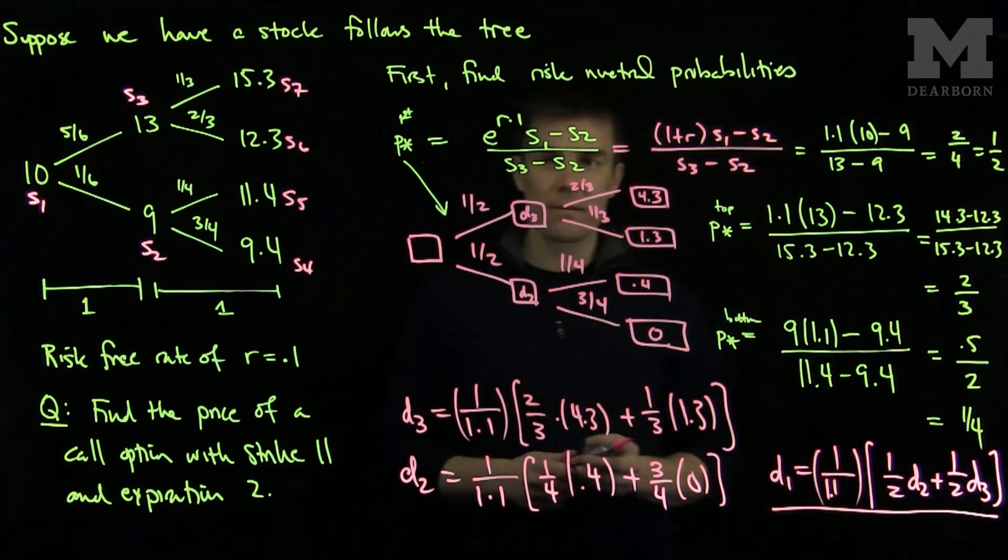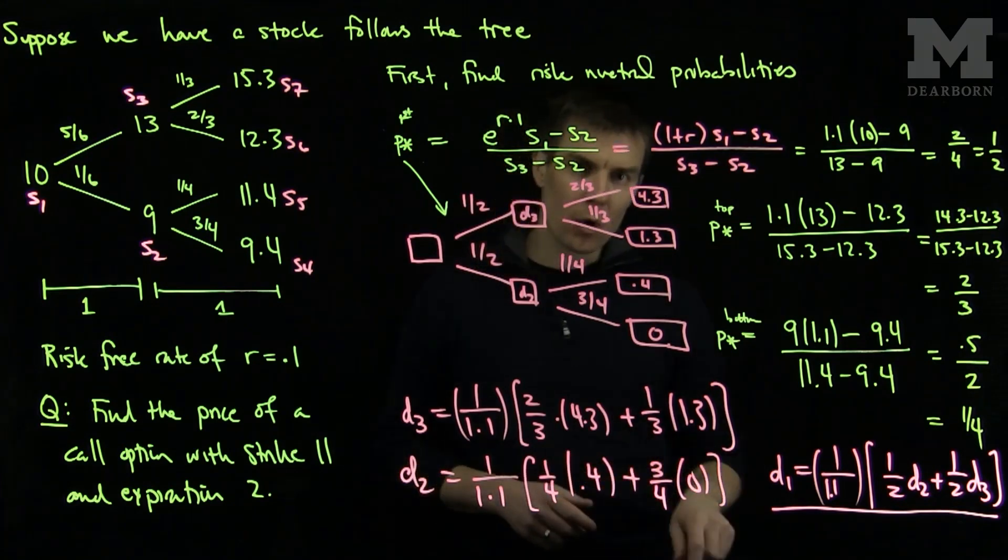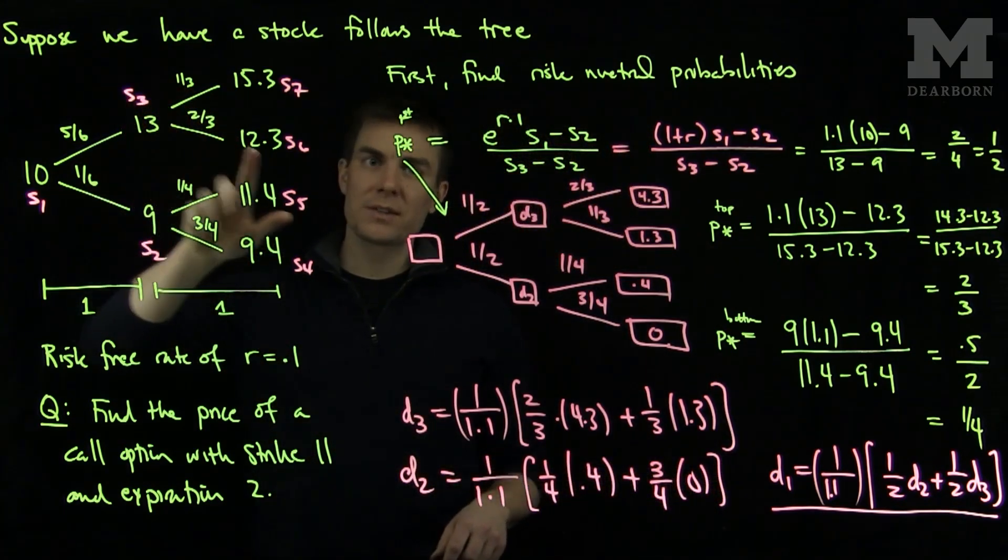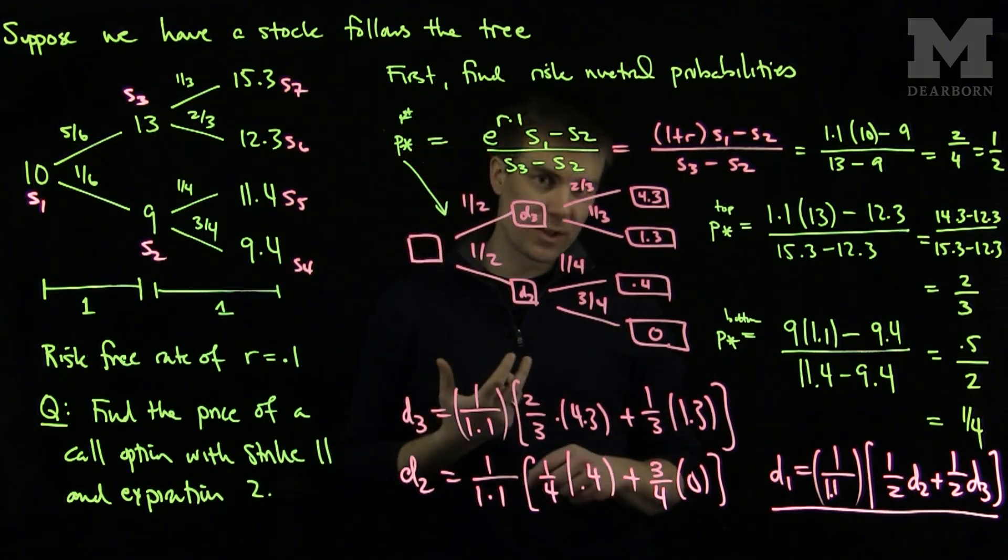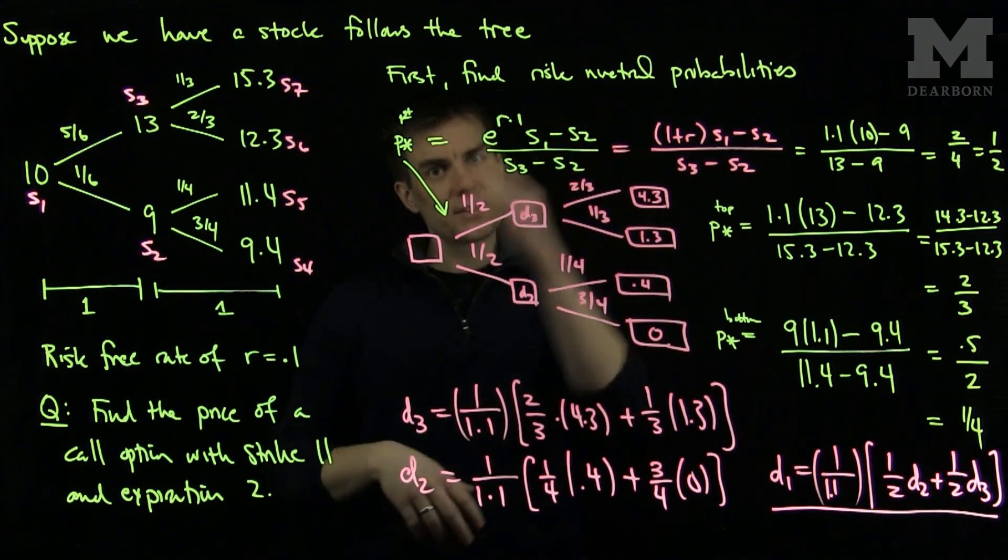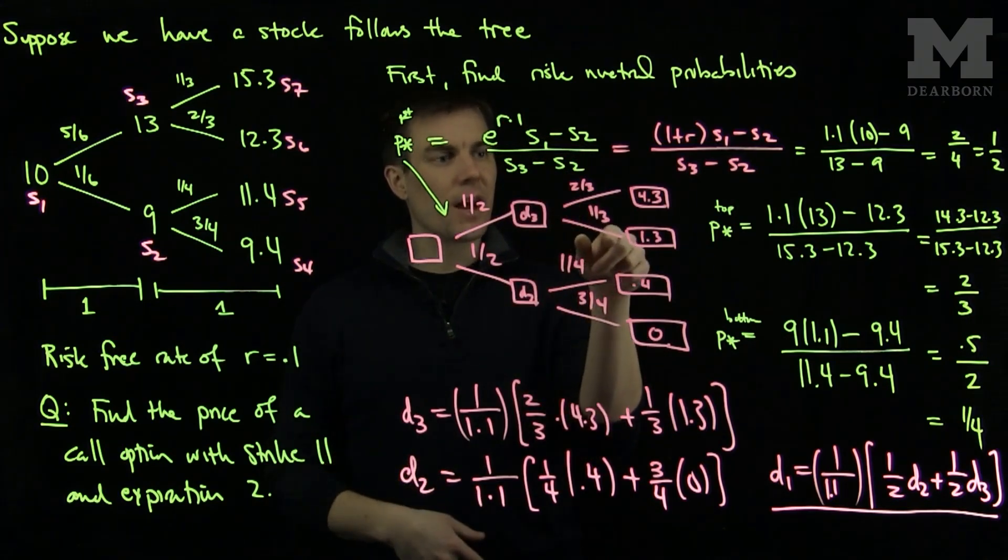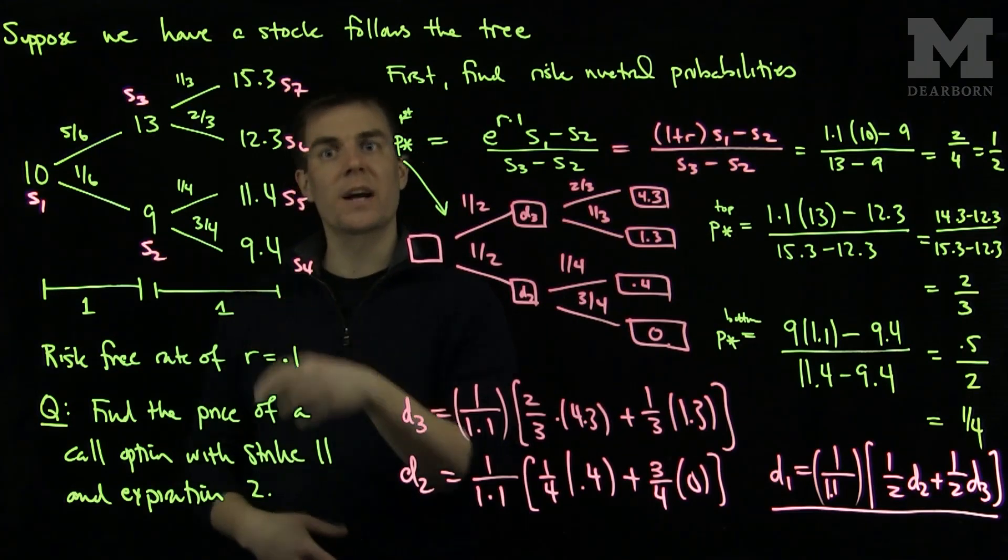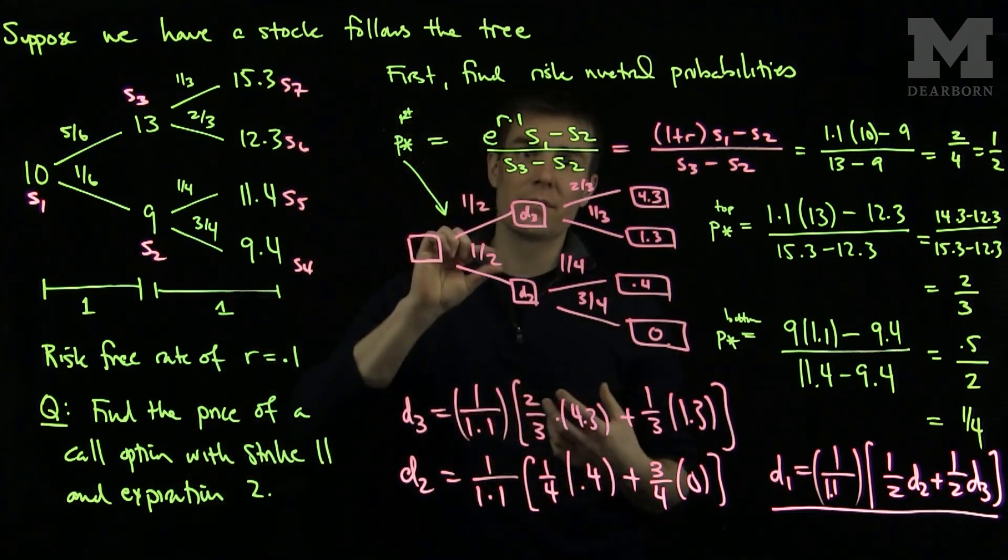So to summarize, if I'm given a stock tree with a variety of probabilities, I will first find the risk neutral probabilities on every subtree. I will discount, find the discount expected values of the derivatives on each of those subbranches, and continue to discount over and over again until I get to the initial seed of the tree.